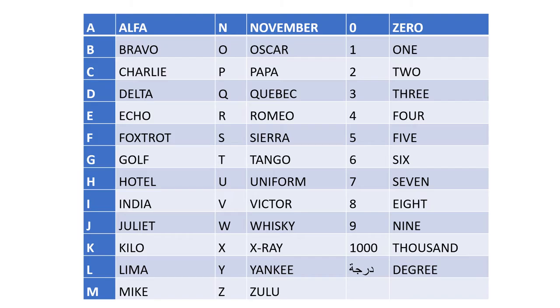We can explain what a call sign is. A call sign is four letters and two numbers, and this is what you say if you want to send a call sign to other vessels.